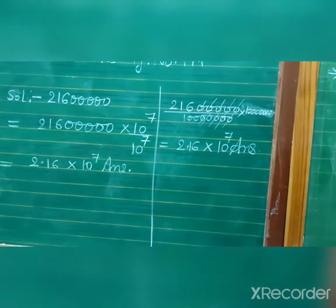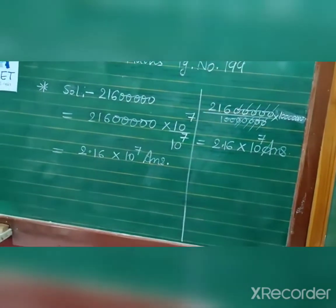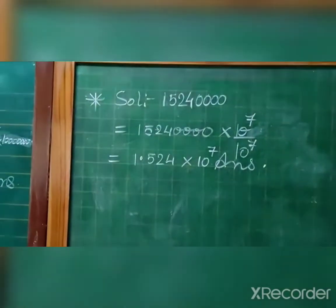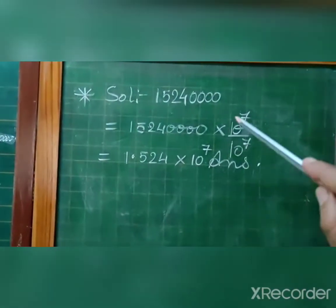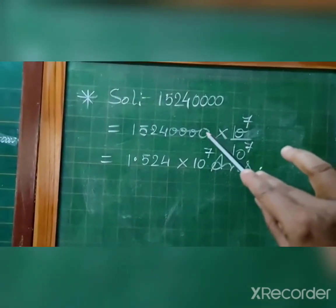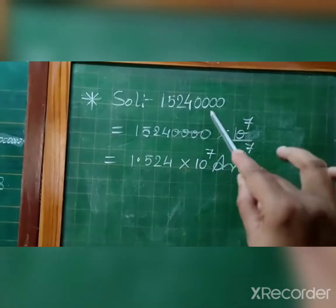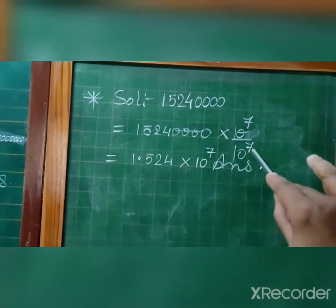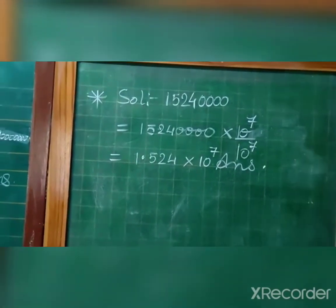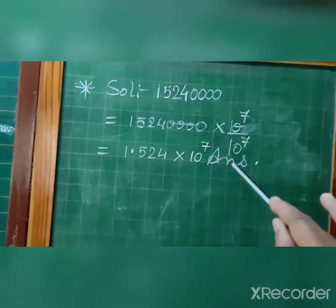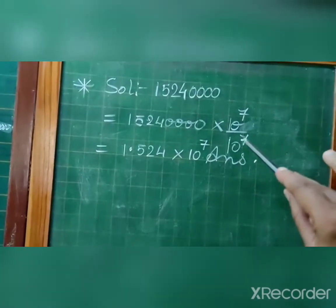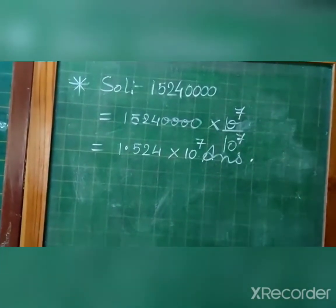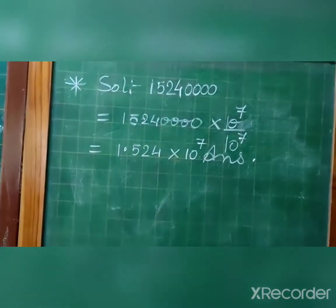Next: the number 1524 followed by zeros. We assume the decimal is at the end and need to move it to the left. Counting: one, two, three, four, five, six, seven — so 10 to the power 7. We multiply and divide by 10 to the power 7. When moving the decimal left, we use the denominator's exponent form. So the answer is 1.524 × 10 to the power 7.